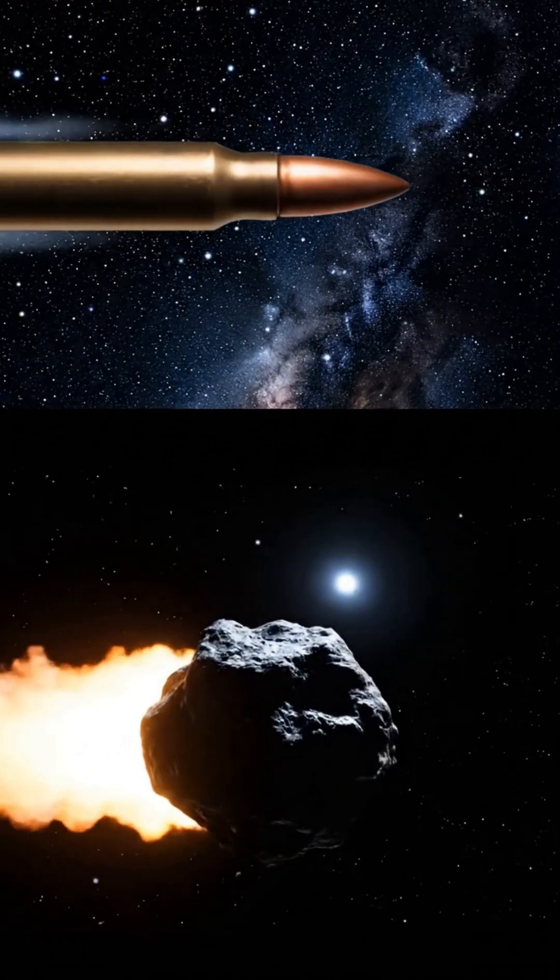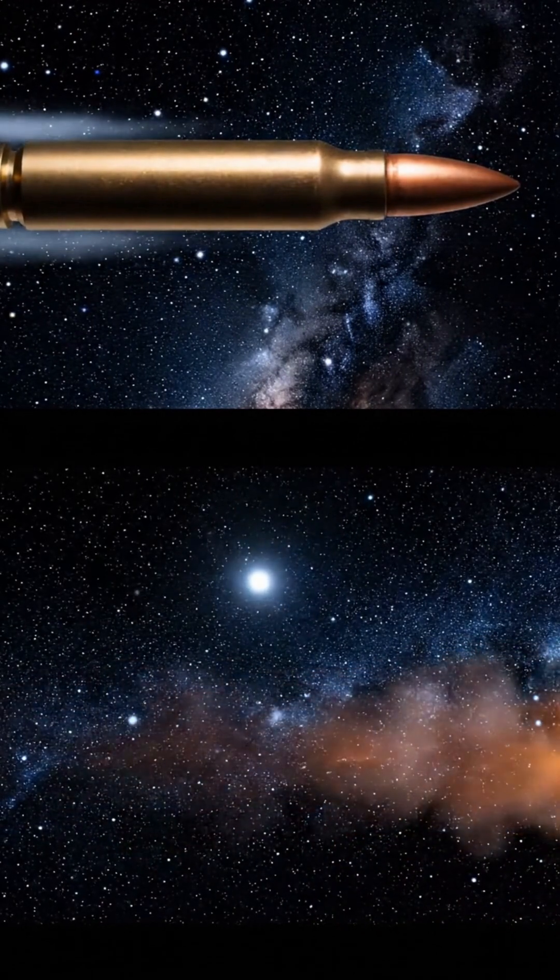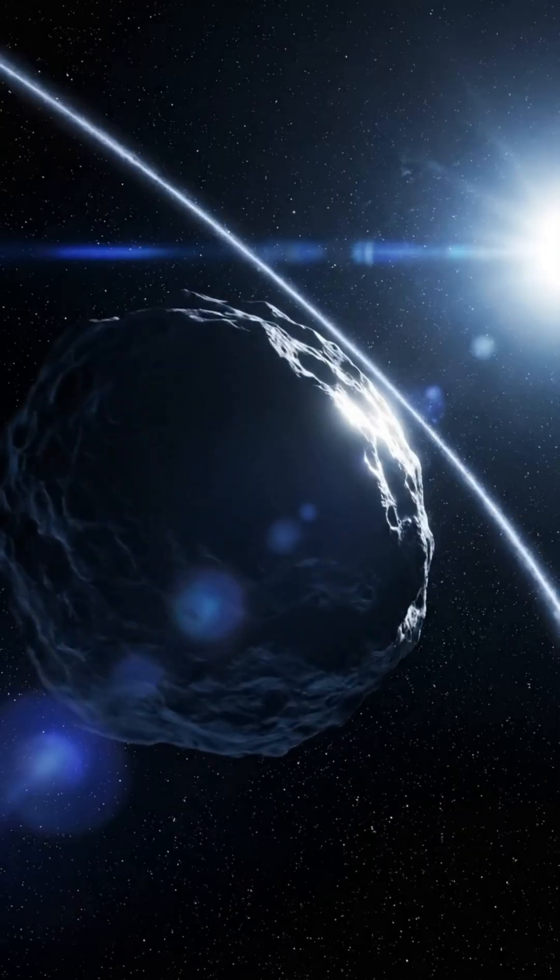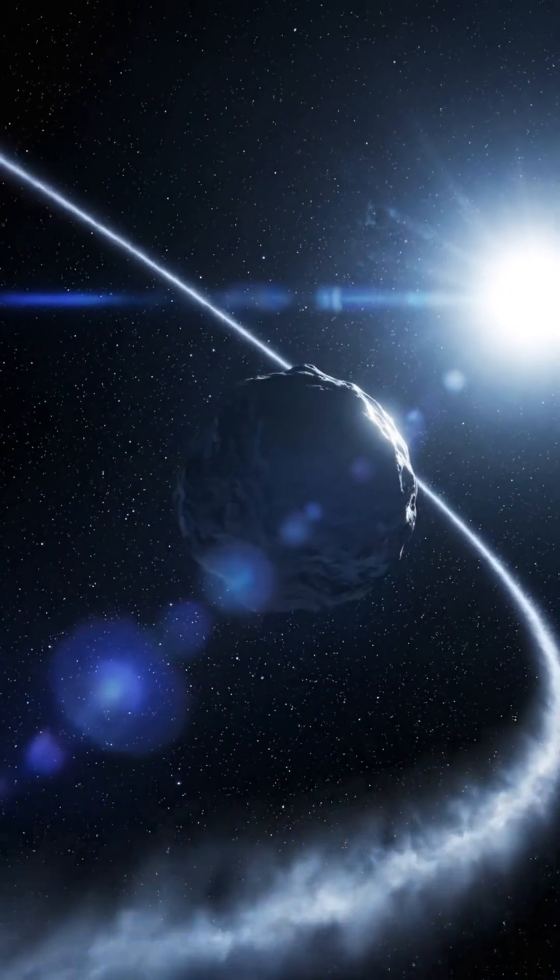To understand this better, a bullet fired from a gun travels at about 1 kilometer per second. An asteroid moves 20 times faster. Some of the fastest ones can reach speeds of 40 to 50 kilometers per second, depending on their orbit.